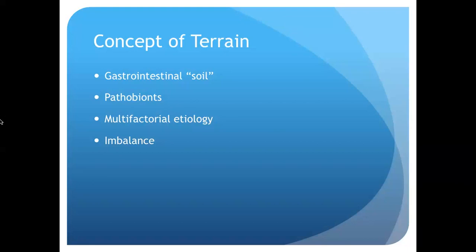Look at medication use. Look at steroids — not just oral steroids like prednisone, but inhaled steroids like Flonase and inhalers. Those drugs are also absorbed systemically and can increase the likelihood of chronic SIBO. It's very important to think about all these different factors when considering what someone's terrain is and the likelihood of them ending up with SIBO as a chronic problem. I also want to say a word about the term SIBO.